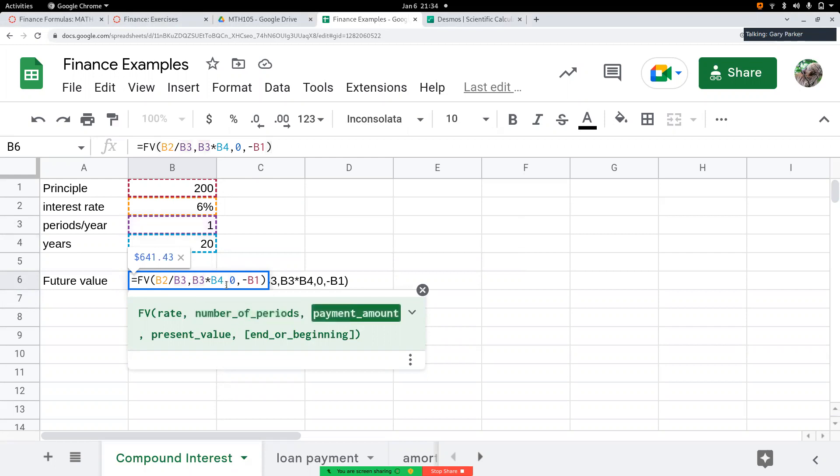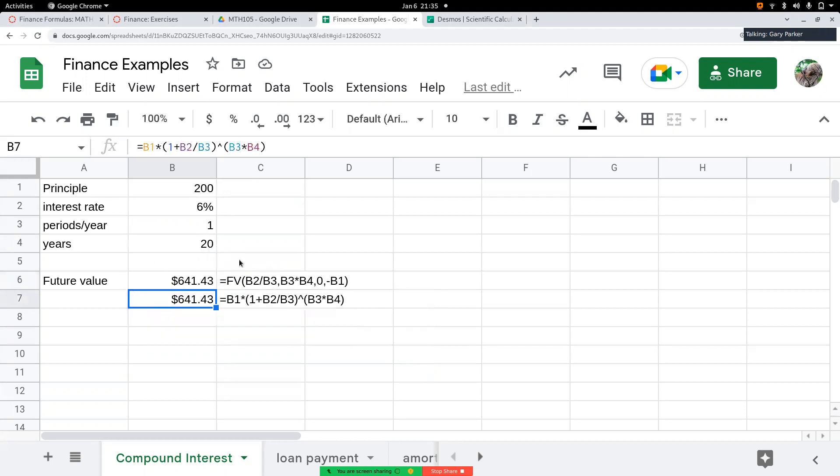The next thing this function FV wants to know is what's the payment amount. Now, we're not making payments. We just want to know what the future value is of our initial investment. So we're 0 for regular payments. And then we have to enter the opposite of our initial amount to end up with a positive value in the end to match the calculated version of the formula.